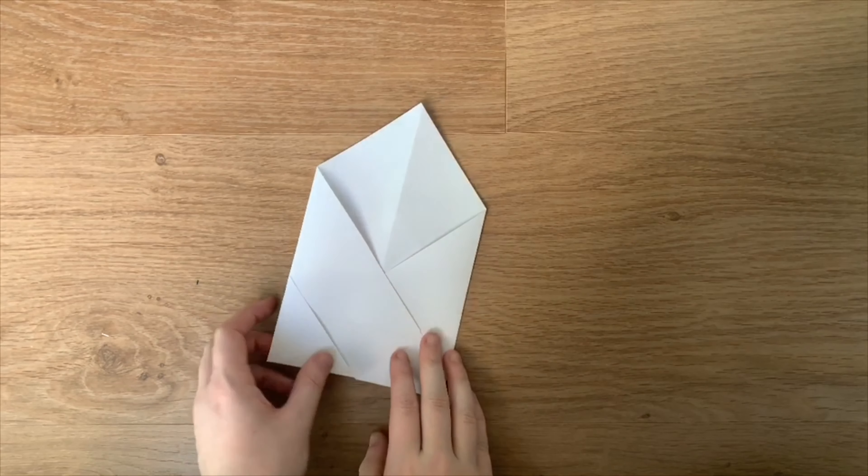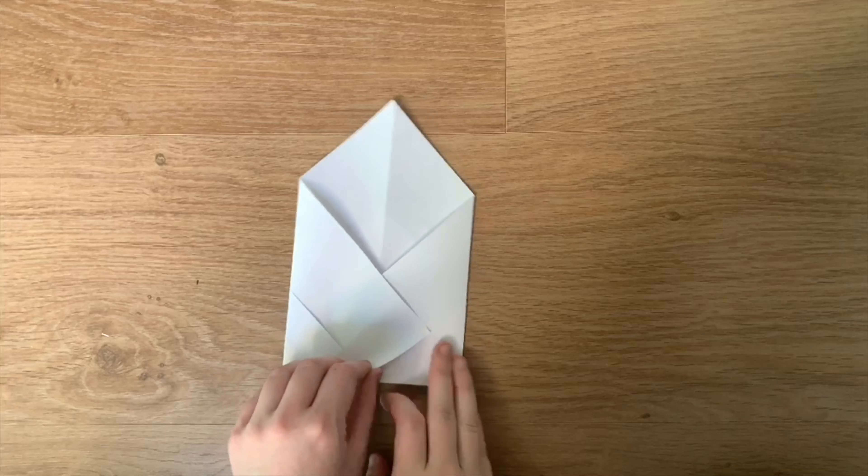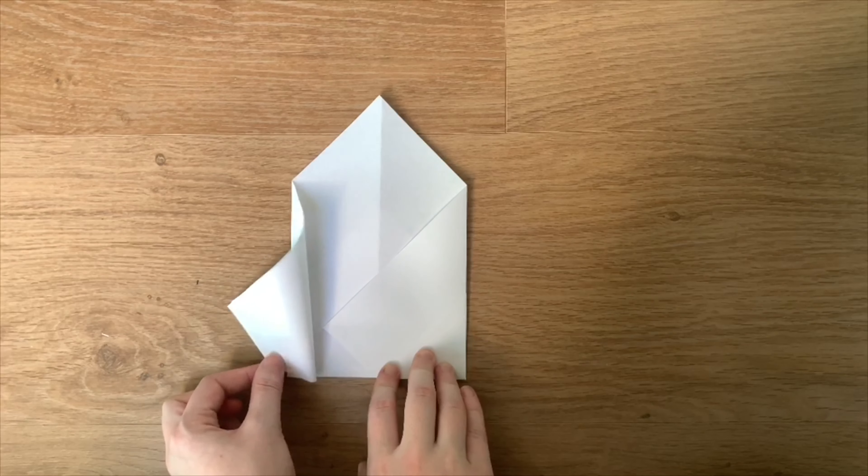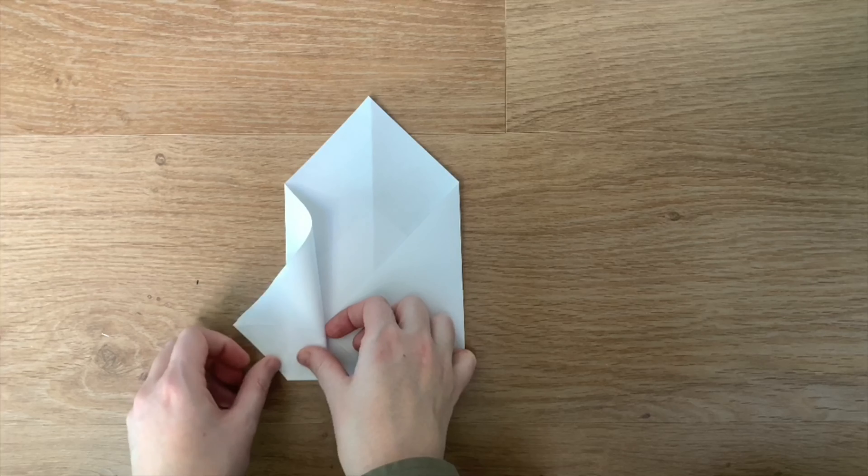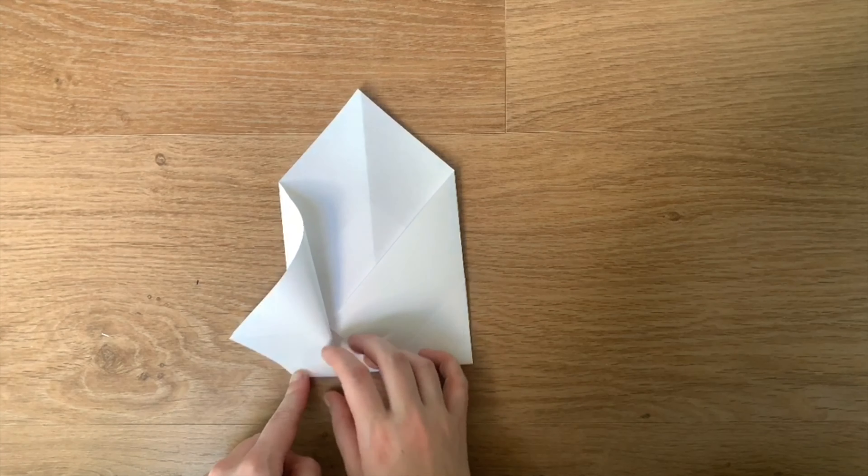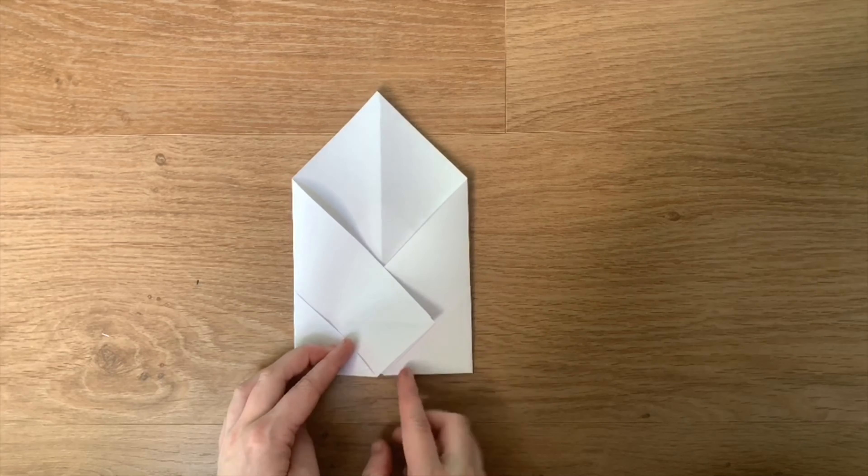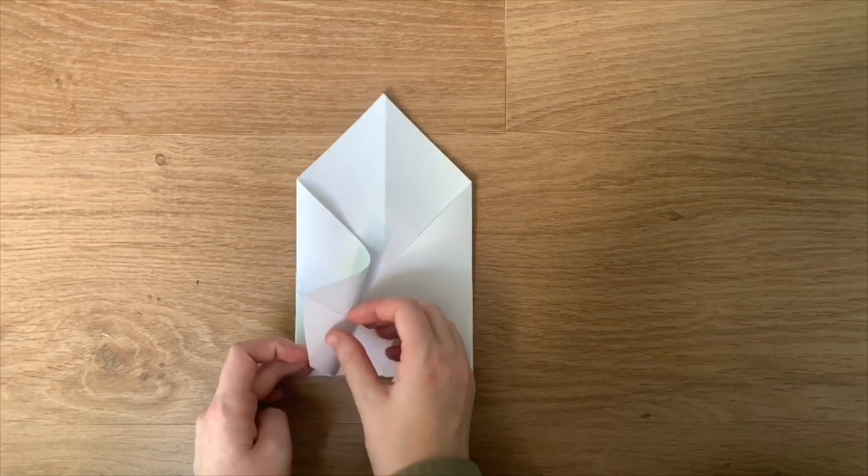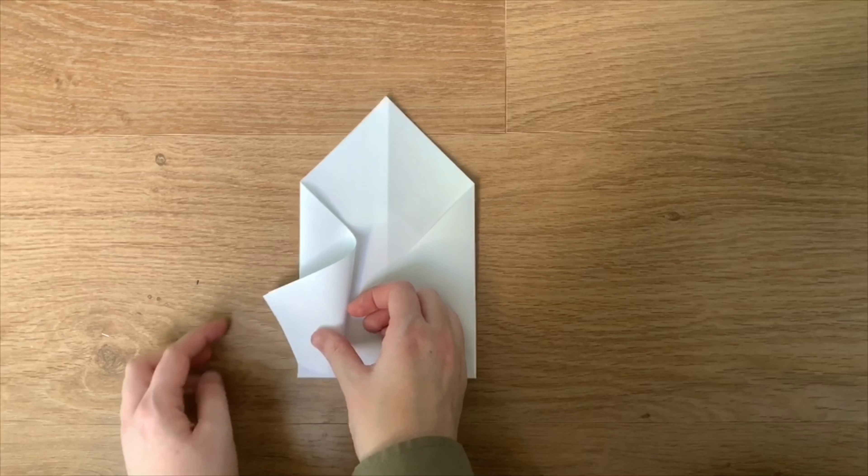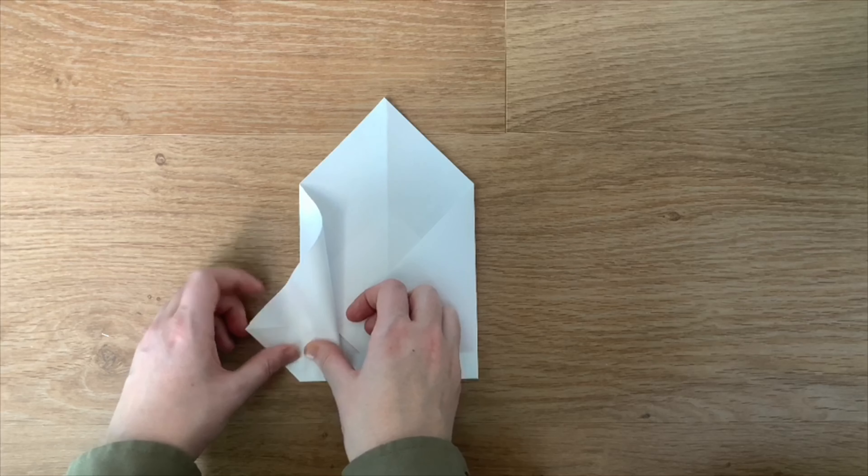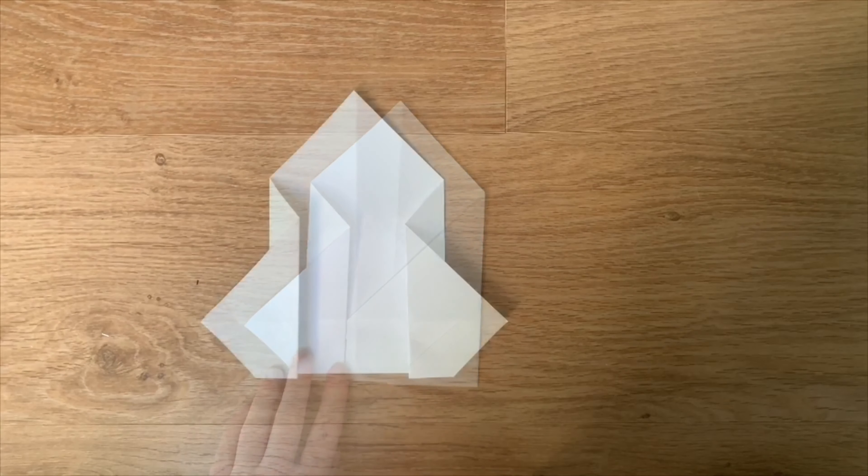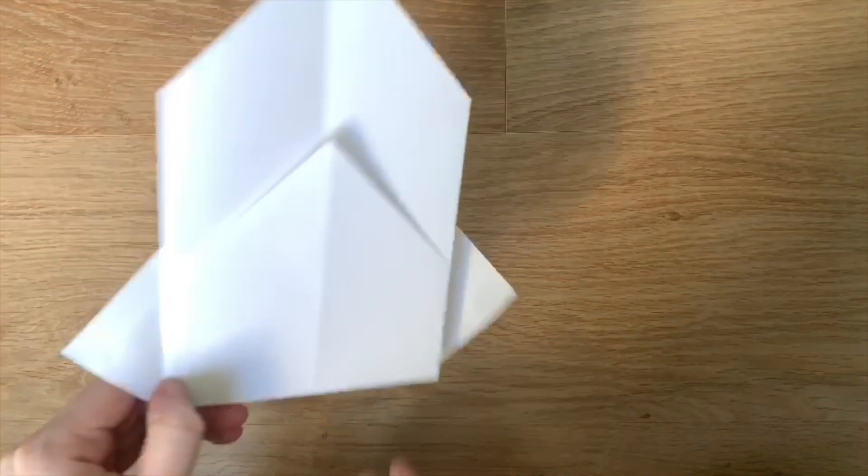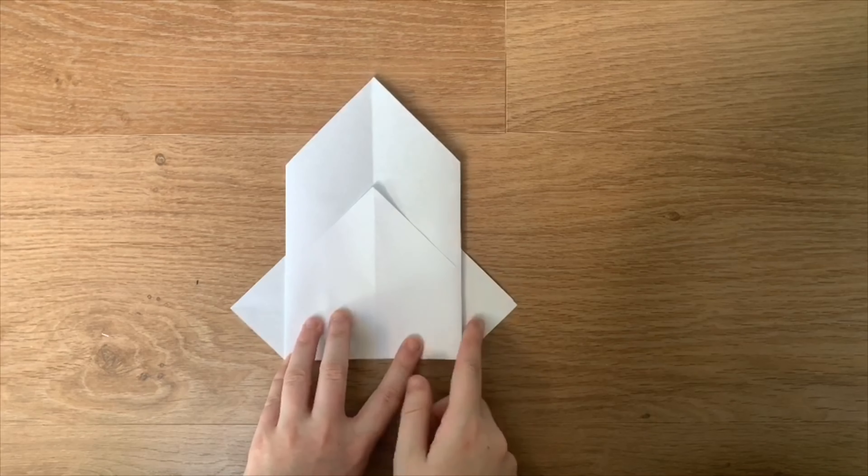Now, take this corner and fold it back out so it aligns with your bottom corner. So you take this corner here and align it with this corner here. And again, you do that with both sides. Now that we've done this, turn it back over and you can see you have your wings.